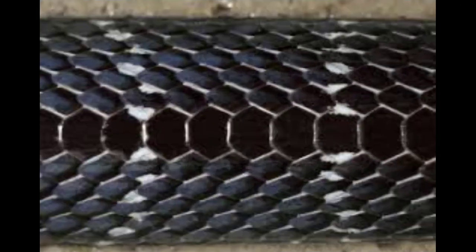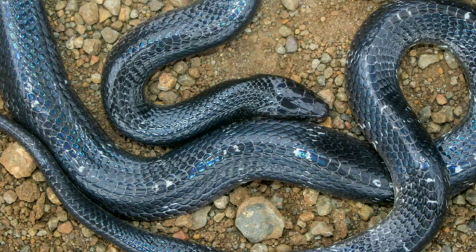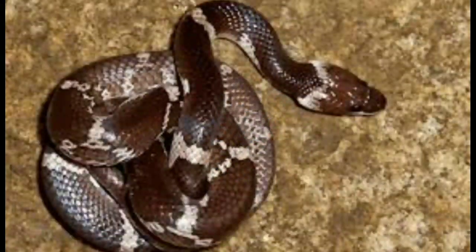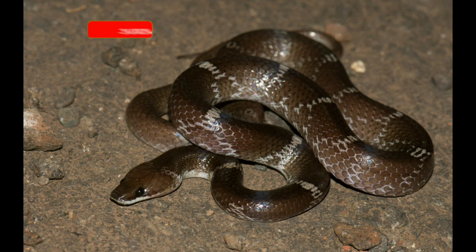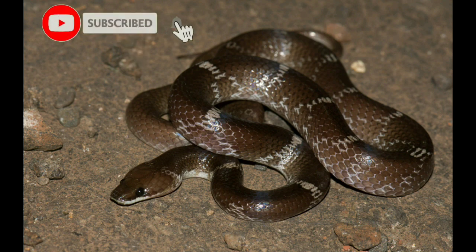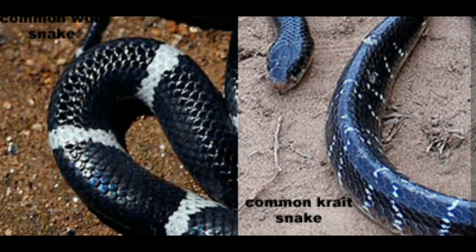Scales: the scales of the common krait snake along its vertebral line are hexagonal — meaning six-sided — and larger, which differentiates them from other body scales. In common wolf snakes, we don't see this phenomenon. All the scales on its back are of the same size and shape, and this is the most important distinguishing feature. These were the main differences between the wolf snake and the common krait snake.